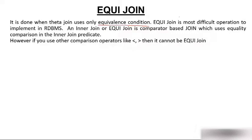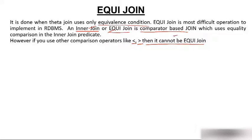Equijoin is the most difficult operation to implement in RDBMS, but I'll make it one of the easiest. An inner join or Equijoin is a comparator-based join which uses equality comparison. In inner join predicate, if you use other comparisons like less than or greater than, then it cannot be Equijoin. So Equijoin only uses the equal condition.